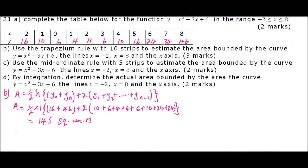We go to part C: use the mid-ordinate rule with 5 strips to estimate the area bounded by the curve Y equals X squared minus 3X plus 6, the lines X equals minus 2 and X equals 8, and the X axis. The mid-ordinate rule gives area equals height times, in brackets, Y1 plus Y2 plus all the mid-ordinates up to YN. Since we are told to use 5 strips, the height will be 2, that is from minus 2 to 0, and 0 to 2, and so on.